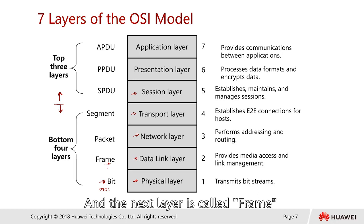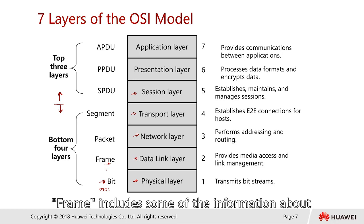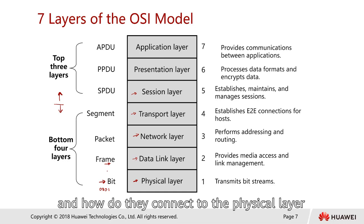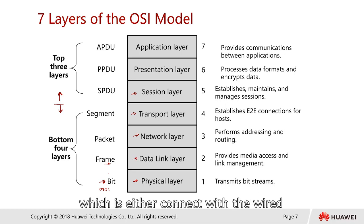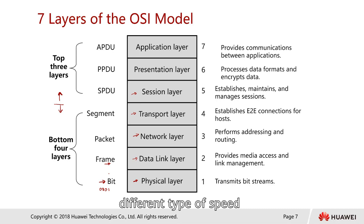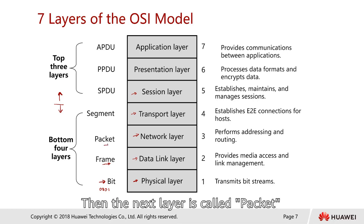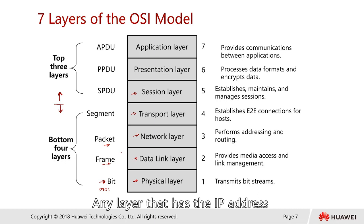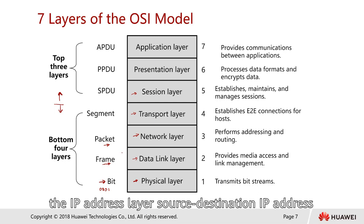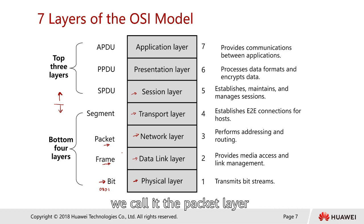The next layer unit is called a frame. A frame includes information about source address, destination address, and how they connect to the physical layer — whether via wired connections of different speeds requiring negotiation, or wireless WLAN/Wi-Fi also requiring negotiation. This is the data link layer. The next unit is called a packet. Any layer that has IP address information — source and destination IP addresses — we call a packet at the network layer.